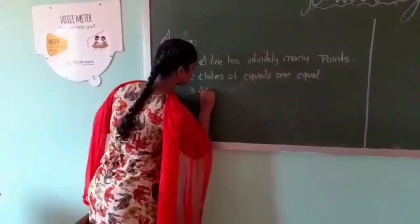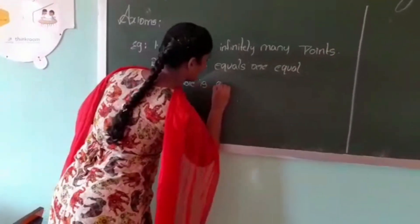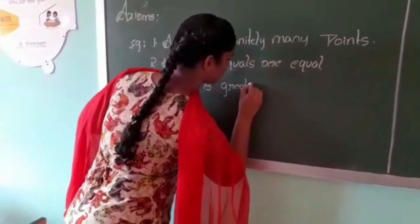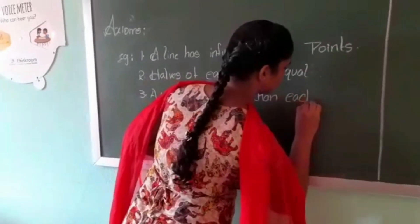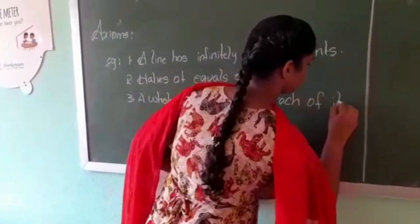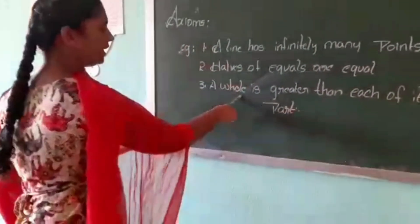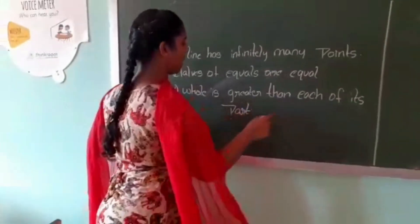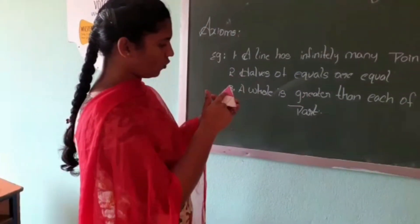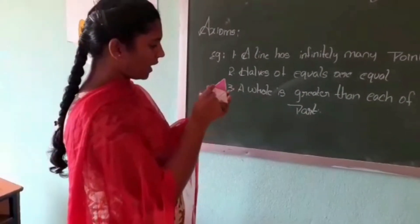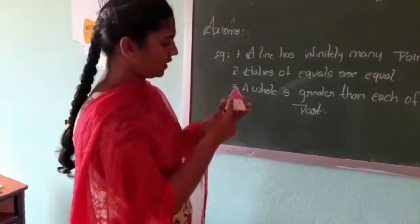A whole is greater than each of its parts. This is a triangle — this is the whole part. It is divided into 4 equal parts. This part is smaller than the whole, so we can say that a whole is greater than each of its parts.